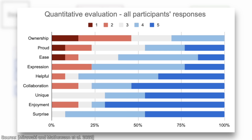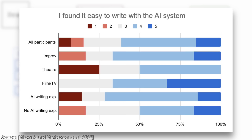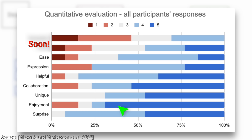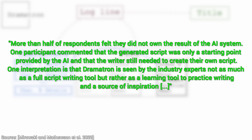Almost everyone was quite surprised by how good the AI did. They enjoyed the process a great deal, found the results coming out of this system unique, and get this: 77% of them found that this system helped them express their creative goals quite well. So, what about the other side where it scored much less? That is proudness and ownership. More than half of respondents felt they did not own the result of the AI system.